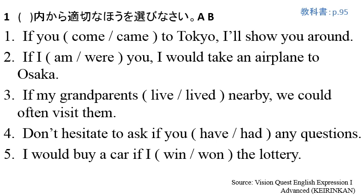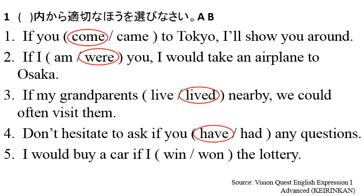Okay, let's take a look at the answers. Number one: if you come to Tokyo, I'll show you around. Number two: if I were you, I would take an airplane to Osaka. Number three: if my grandparents lived nearby, we could often visit them. Number four: don't hesitate to ask if you have any questions. Number five: I would buy a car if I won the lottery.